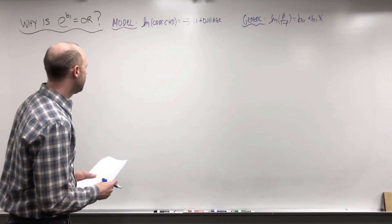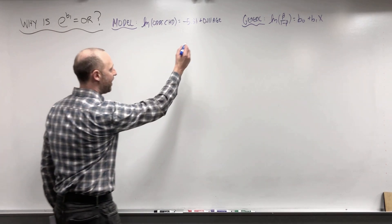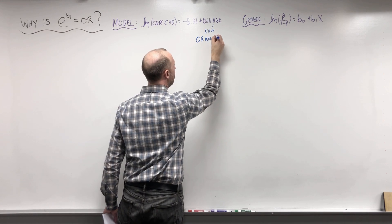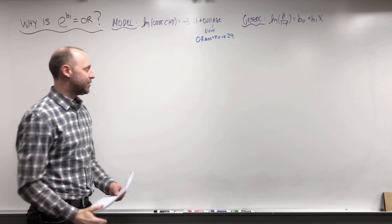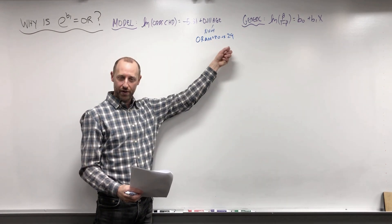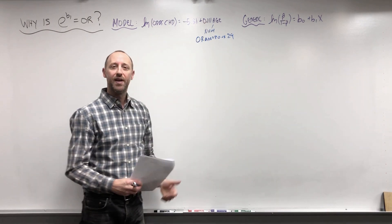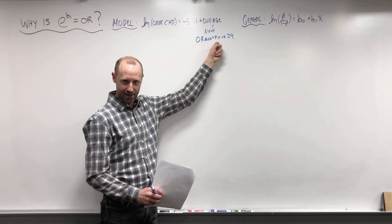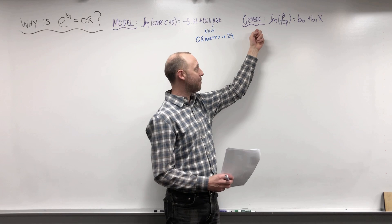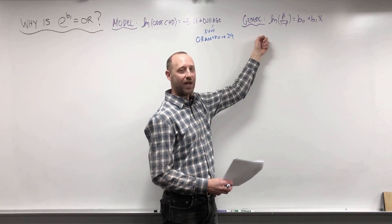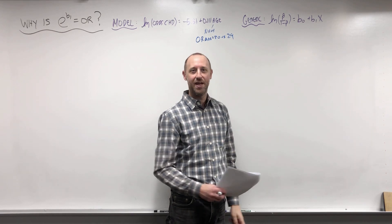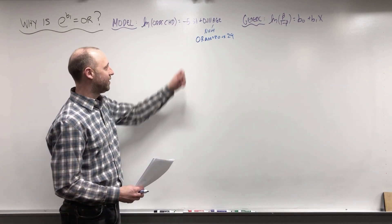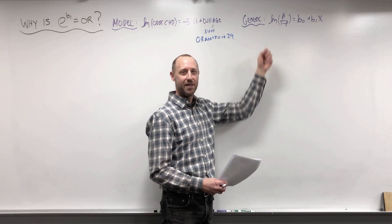Age is numeric. I'm going to get the odds ratio of age 30 versus 29, showing a one-year increase in age. Remember, if we exponentiate .111 it gives us the odds ratio associated with a one-unit increase in age. I'm going to do it for a specific one-year increase going from 29 to 30, and then make it generic going from age A to age A plus 1. Sometimes it's helpful, especially without a rigorous mathematical background, to use numeric values before going to A's and B's.